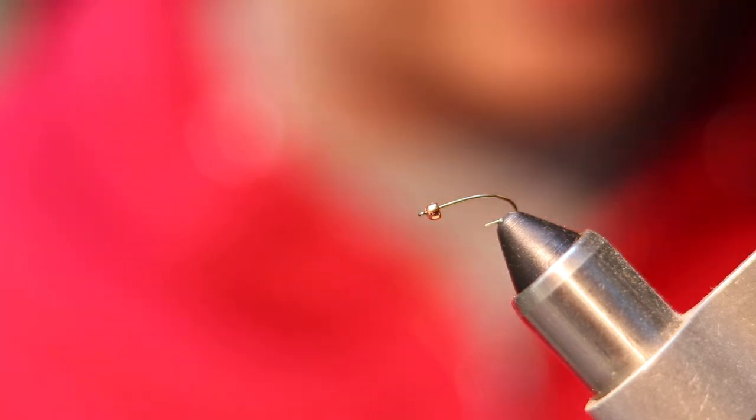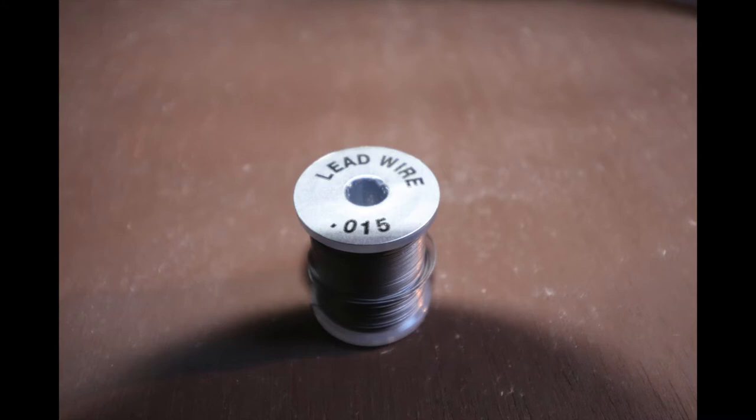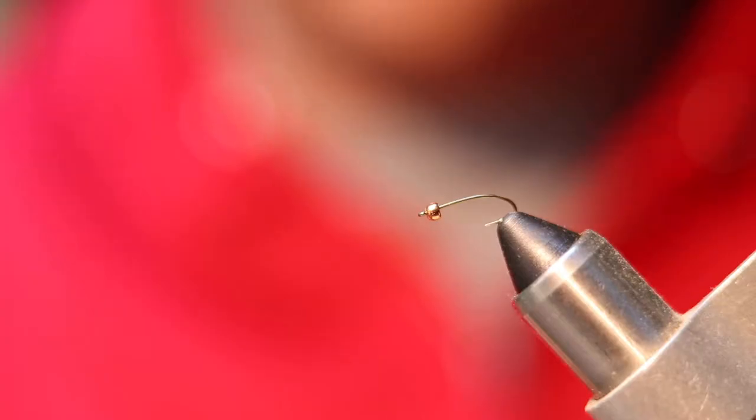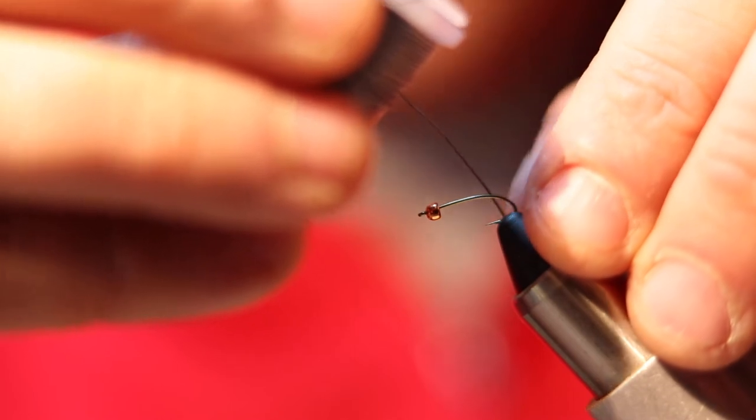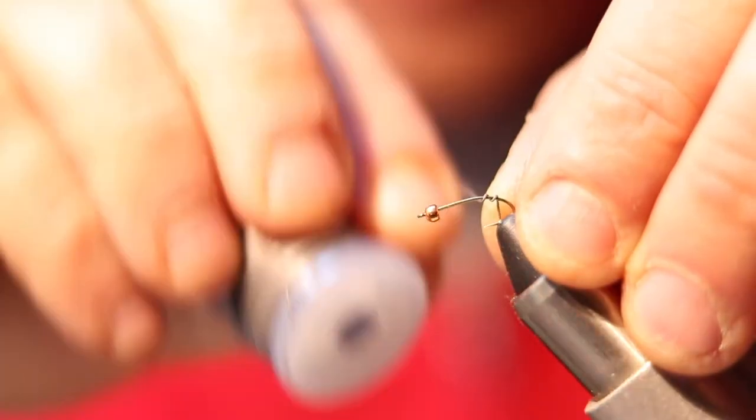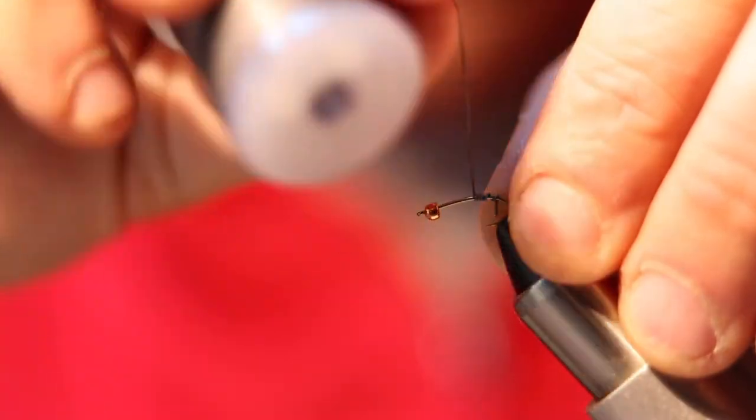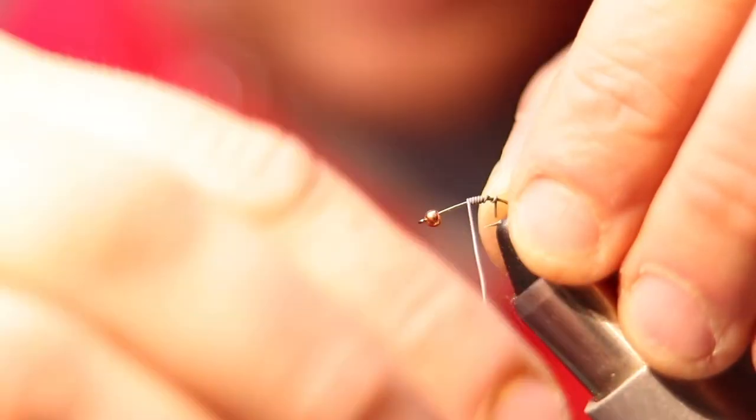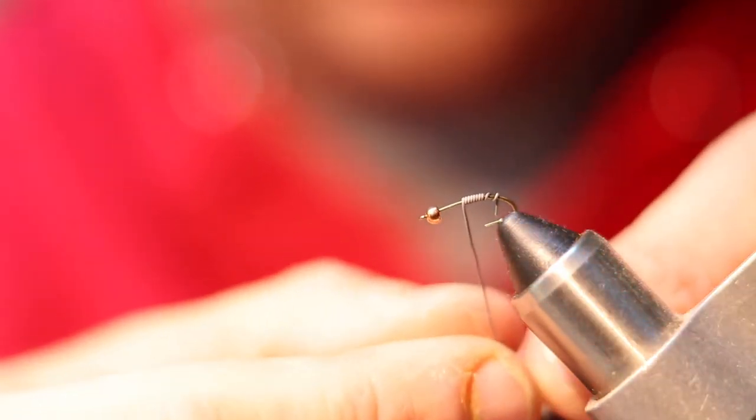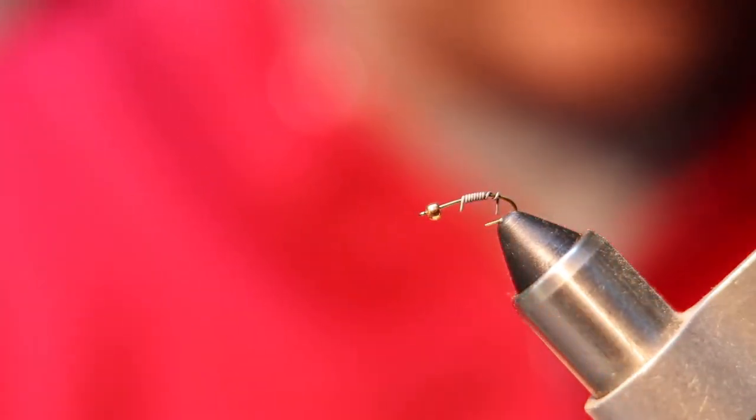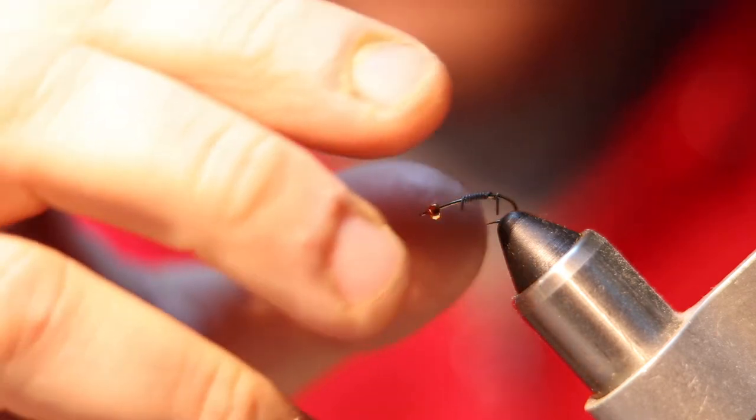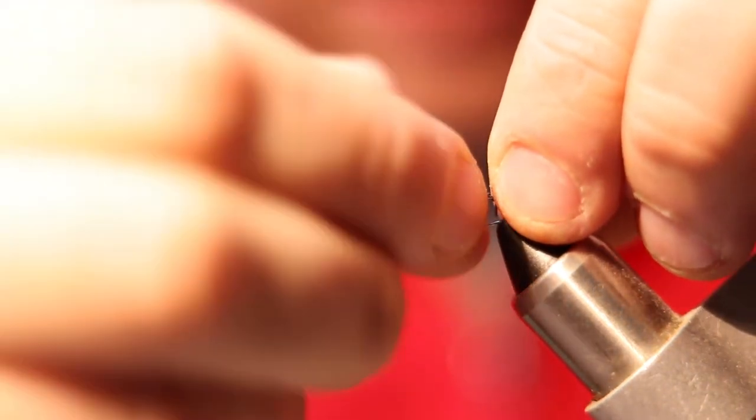First thing you want to do is get your hook in the vise and get the bead on the hook. You can look up other information on the best ways to do that—it's really just sliding the bead onto the hook. Step two is you're going to want to put some lead wire onto the hook, and that's just going to give the fly a little bit of weight and help it get down to where the fish are. You take your lead wire and wrap it around the hook, and I like to go around seven, eight, nine times, and then just pinch it off.